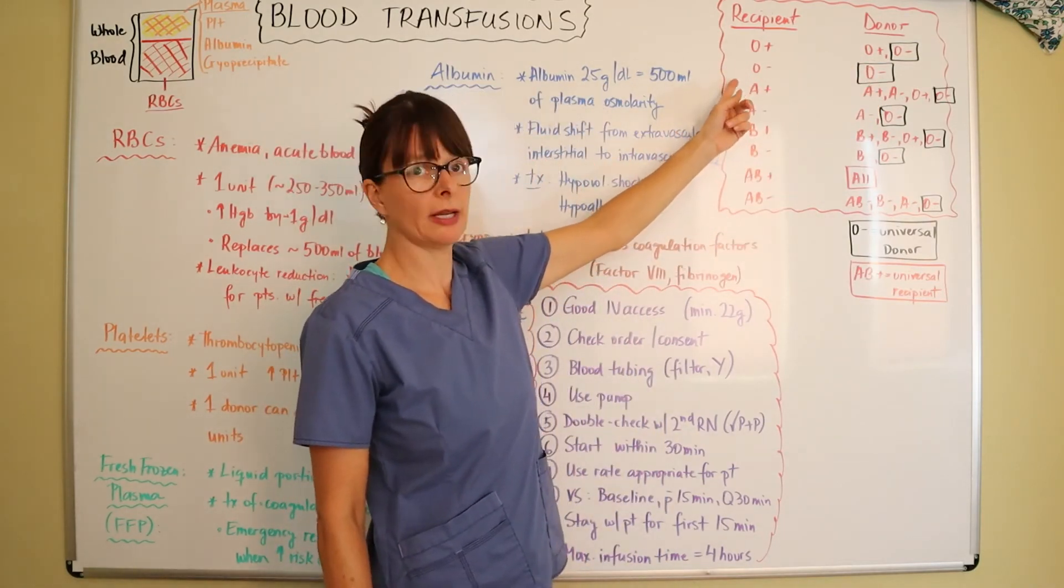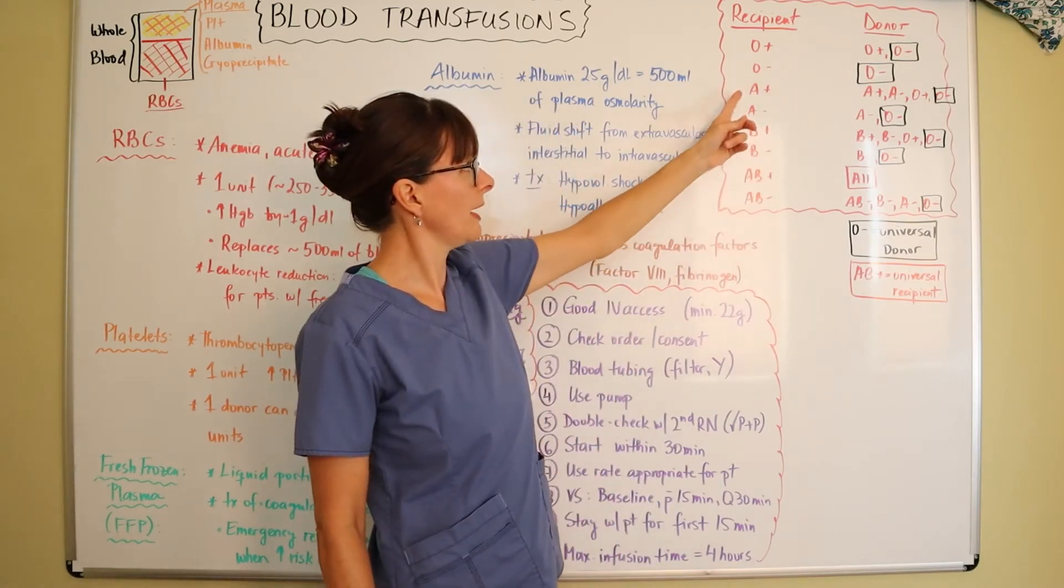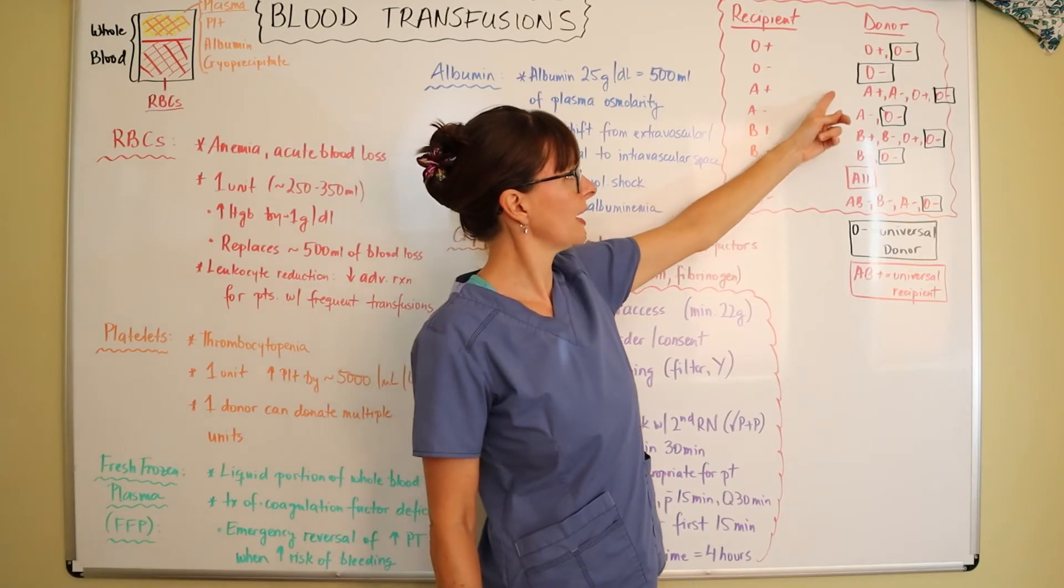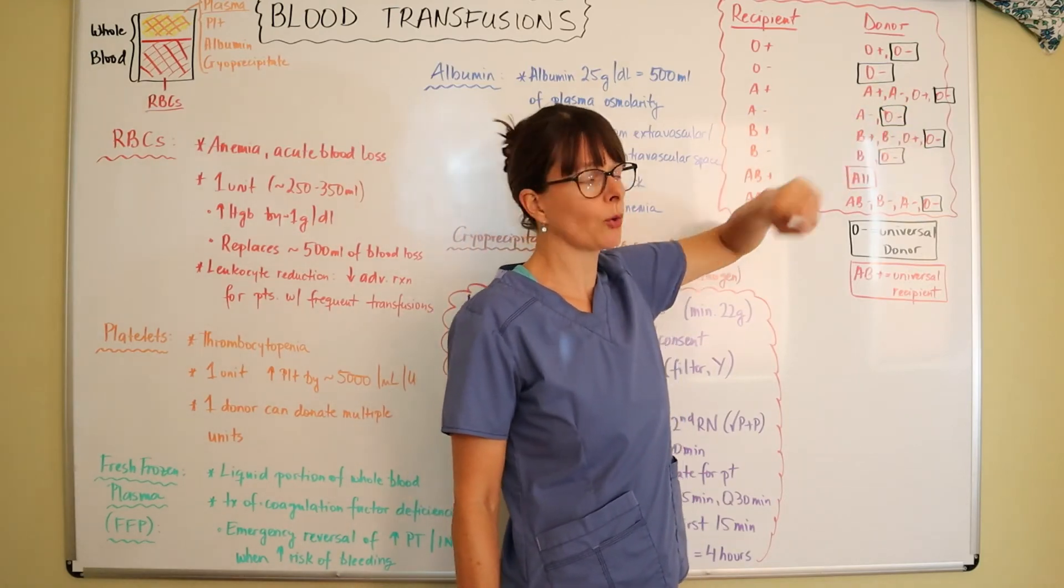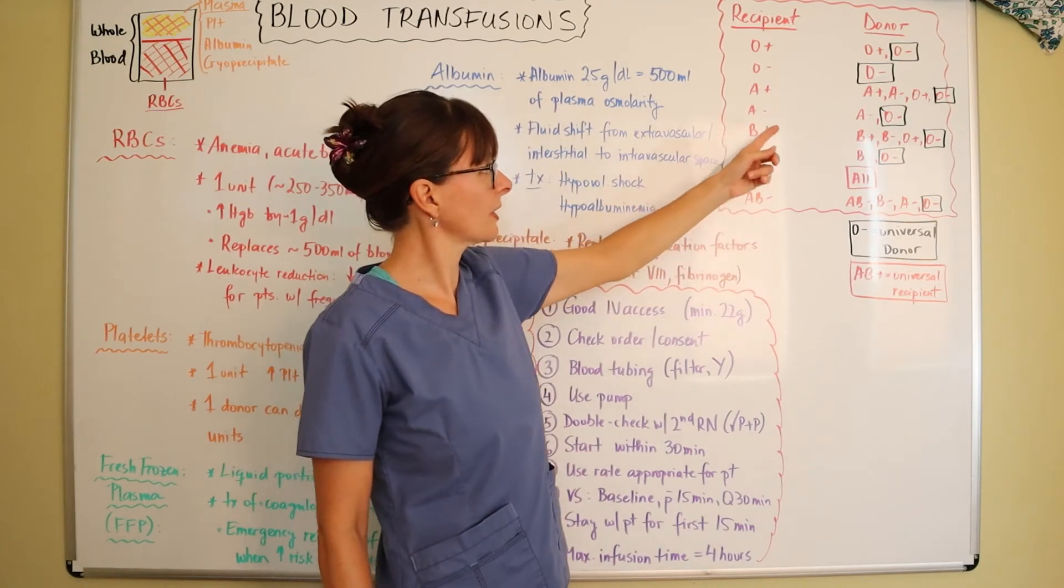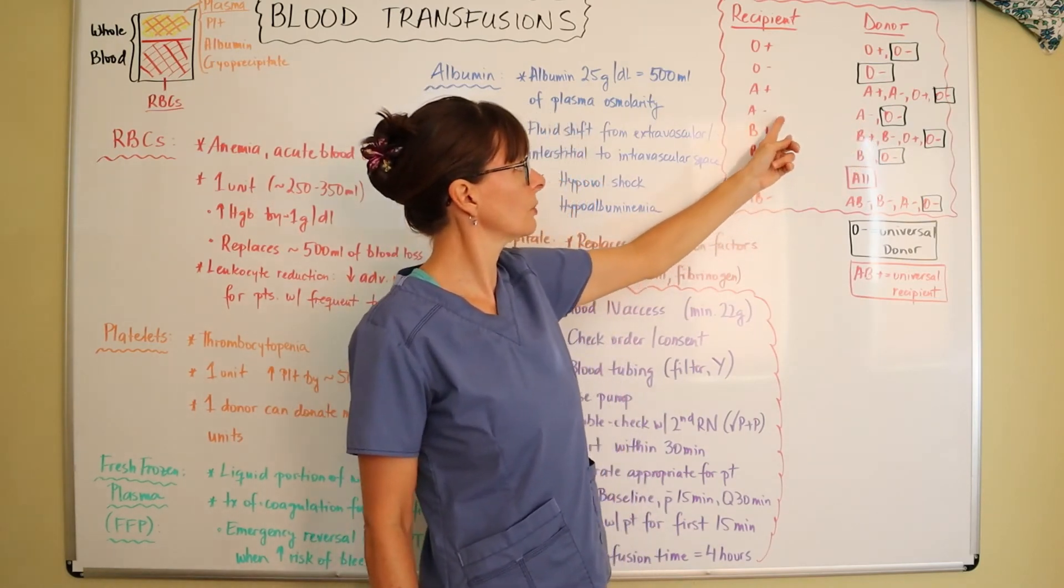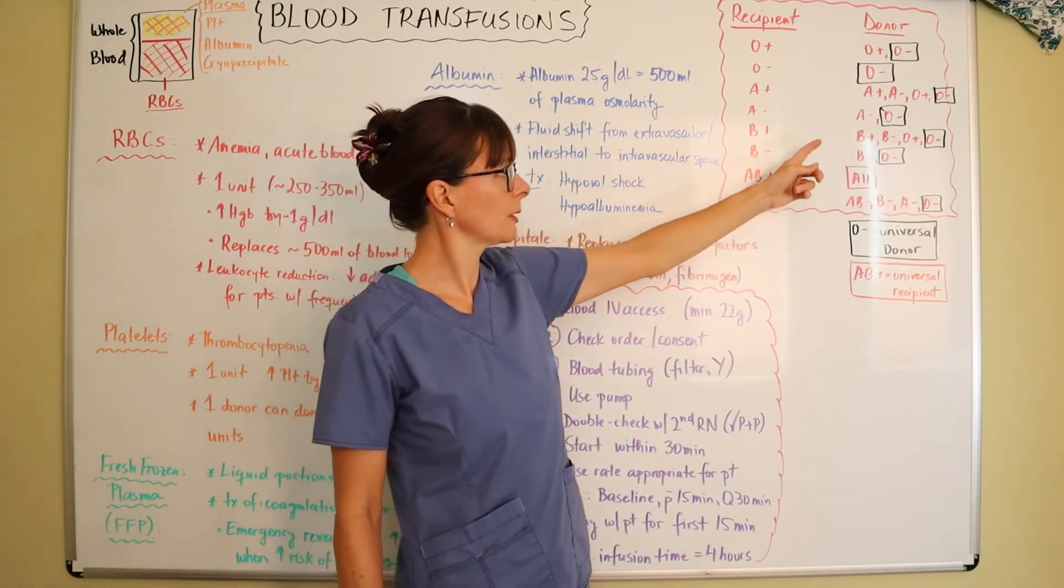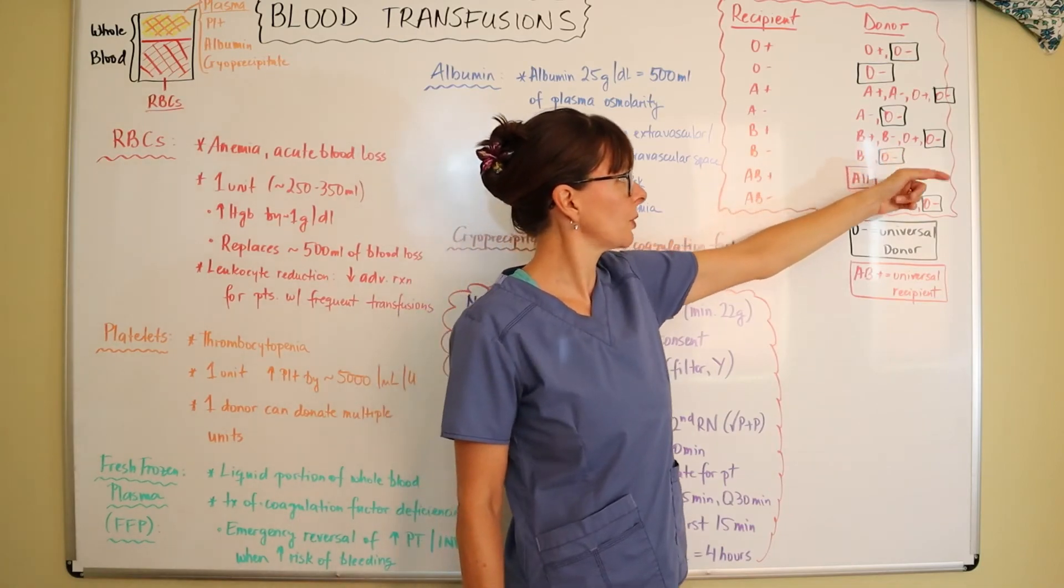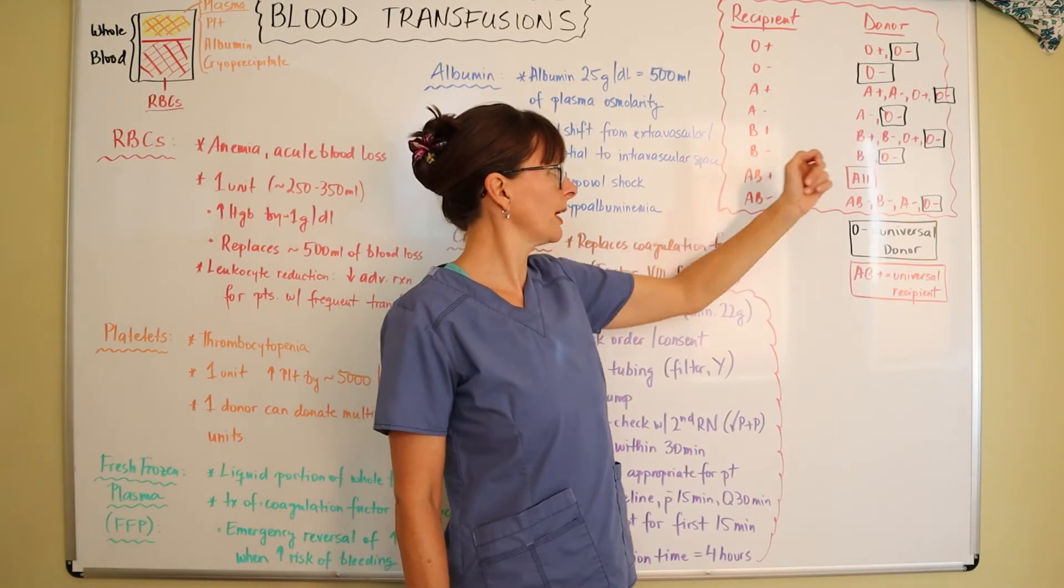Same with A. A positive can receive A positive and A negative as well as O positive and O negative. B positive can get both B types as well as both O types. B negative can only get B negative or O negative.